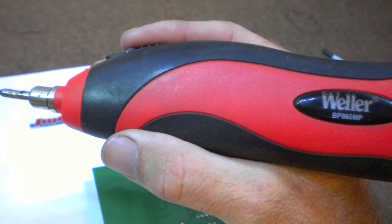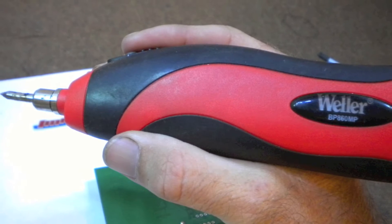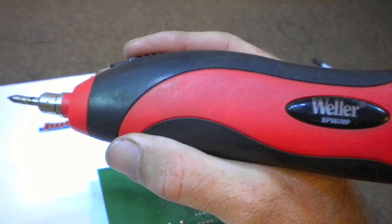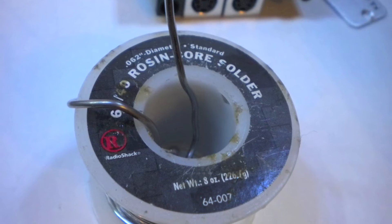If you do find bad solder joints, the fix is very simple. You will need a small soldering iron and some solder to fix it.